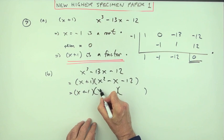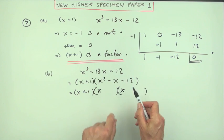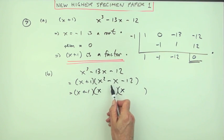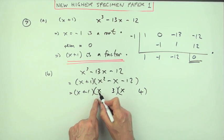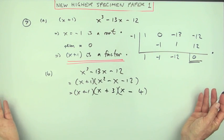The first times the first makes the first. So it must be x times x. Factors of 12 that have a difference of just one. That'll be three and four. The negative will go to the larger of them. And that says they've got opposite signs. So that's it done.